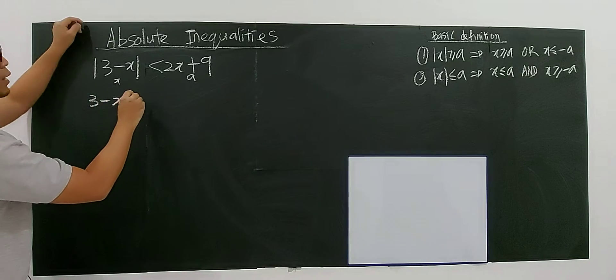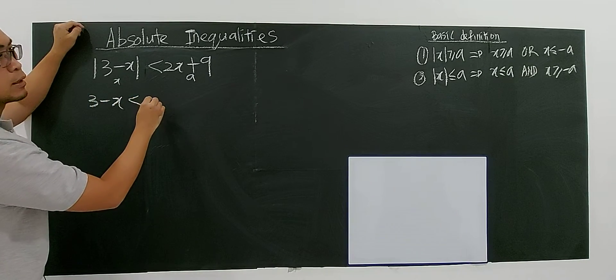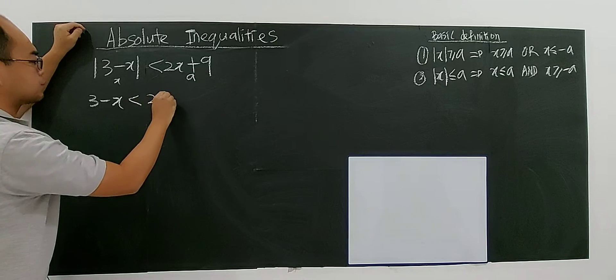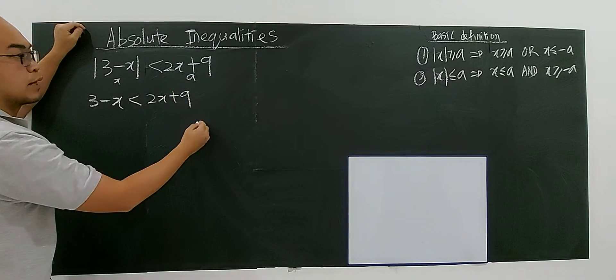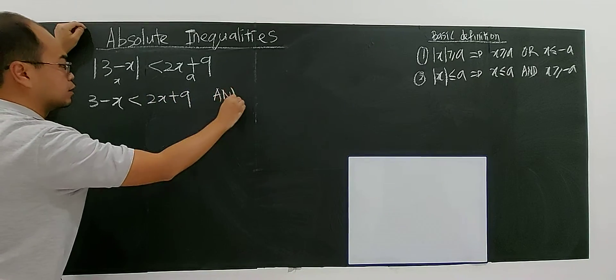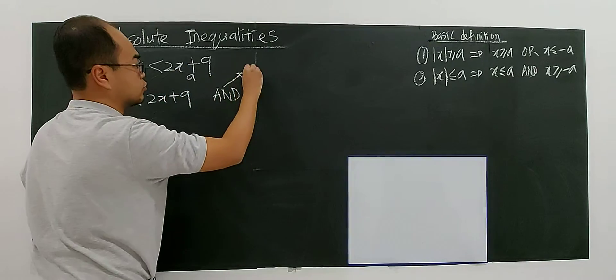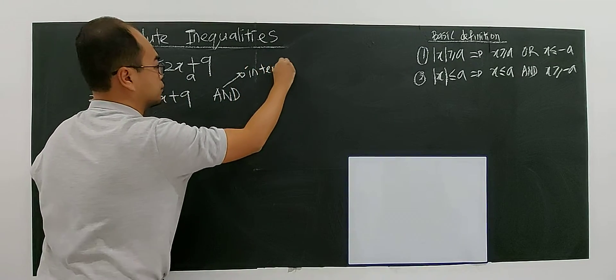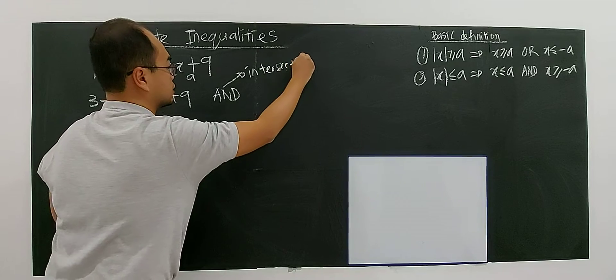So it will be 3 minus x less than a, 2x plus 9. And we use the and and all is very different. And is referred to intersection, okay? Persilangan. Intersection.